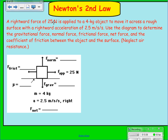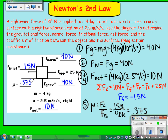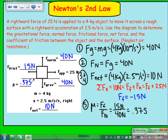Now pause the video and try the next problem on your own, then hit play to reveal the answers. The answers are: force gravity is 40 newtons, force normal is 40 newtons, friction is 50 newtons, net force is 10 newtons, and the coefficient of friction is 0.375.